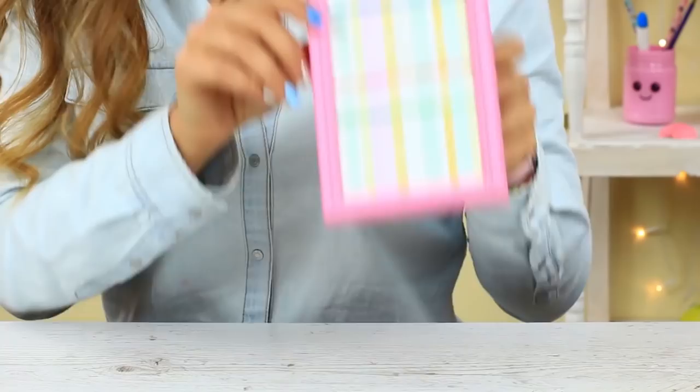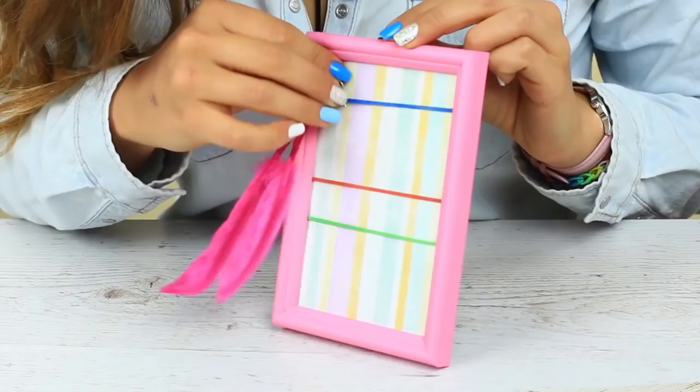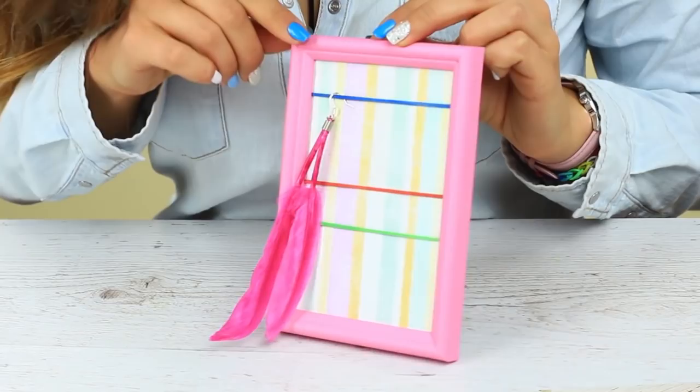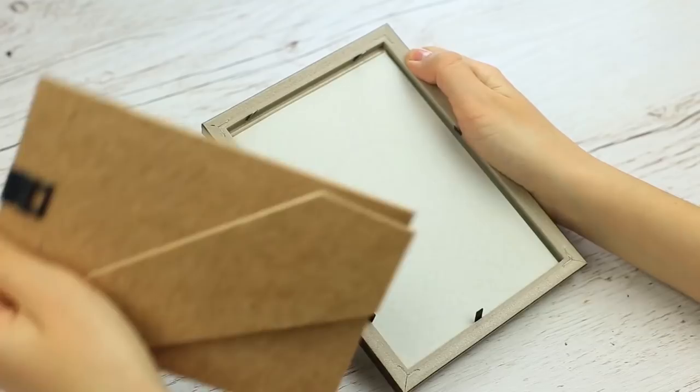Do you think your old photo frame is too boring? Let's renew it and make a jewelry holder. Unfold the clips and take off the back. Remove the glass. We won't need it anymore. Put the elastics on the back.